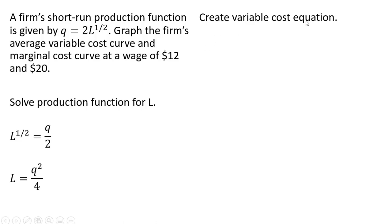Now we're going to create a variable cost equation. Variable cost is the wage times the labor input, units of labor. And so for L, we're going to plug in Q squared divided by 4. And we have our variable cost equation. It's a function of the wage and units of output.